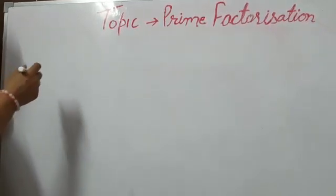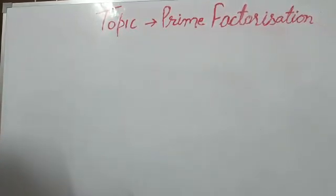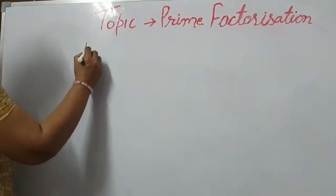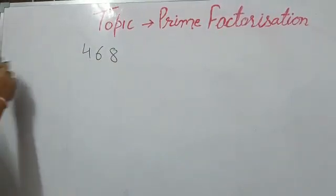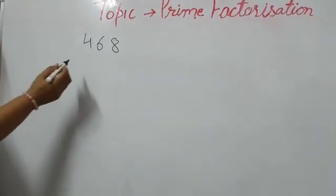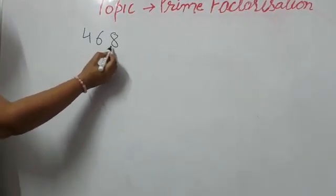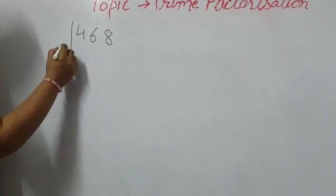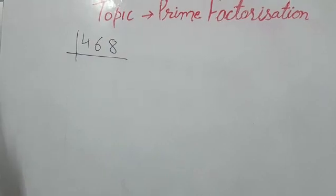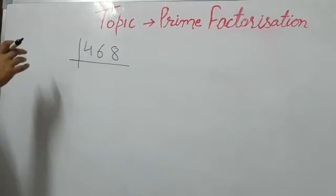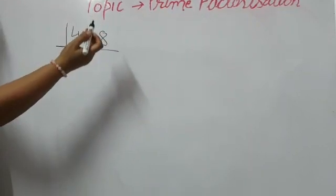Suppose we have a number 468. Now find the prime factors of 468. First, while using divisibility test, we can see which number the given number is divisible by.